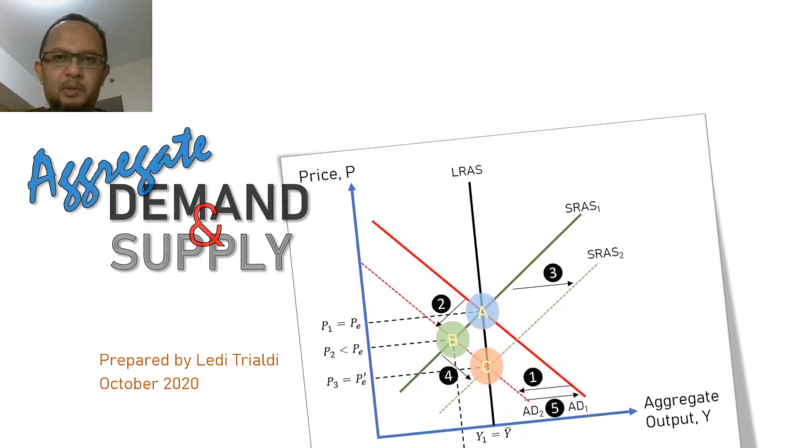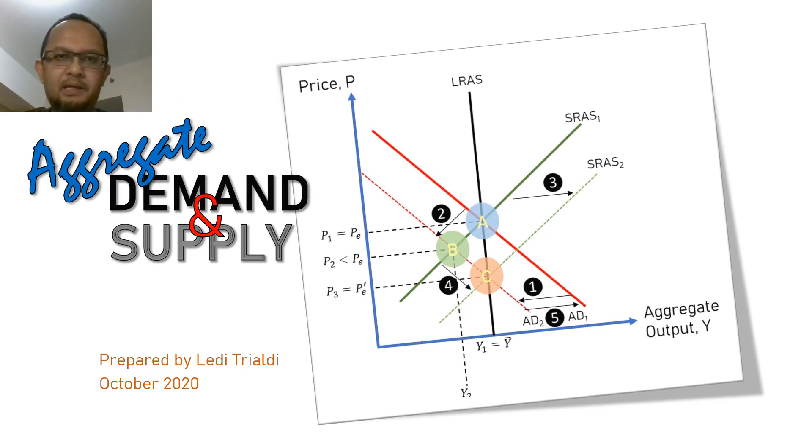Assalamualaikum warahmatullahi wabarakatuh, good day everyone. In this second video, let's continue learning about the aggregate supply before we discuss the interaction between both aggregate demand and aggregate supply. Similar to the demand definition, the aggregate supply curve shows the quantity of all goods and services produced or supplied in the economy at any given aggregate price level.